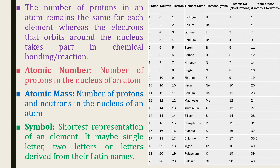Hydrogen, boron, carbon, nitrogen, and oxygen are some elements represented with a single letter. Helium, lithium, beryllium, neon, and magnesium are some elements represented with two letters. Sodium and potassium are represented by their Latin words — Natrium and Kalium — with the symbols Na and K respectively.